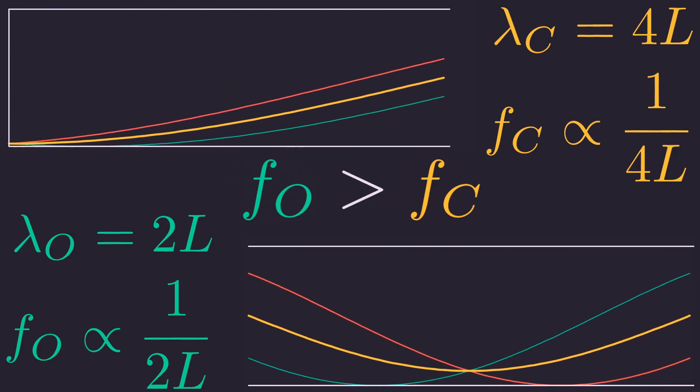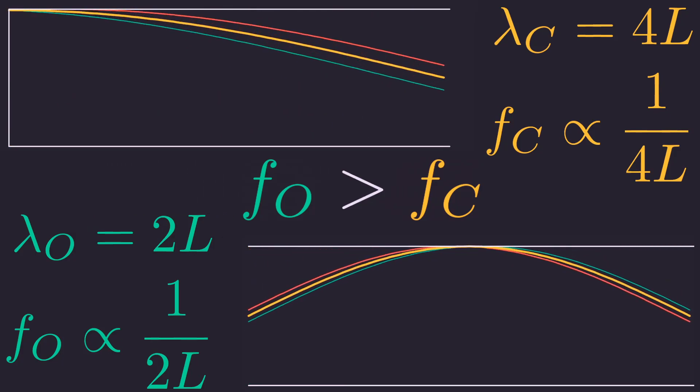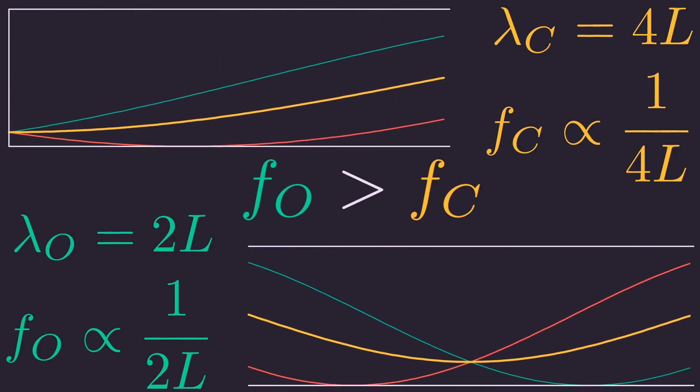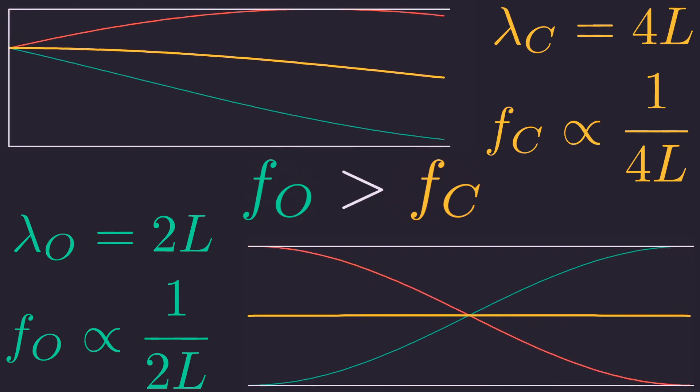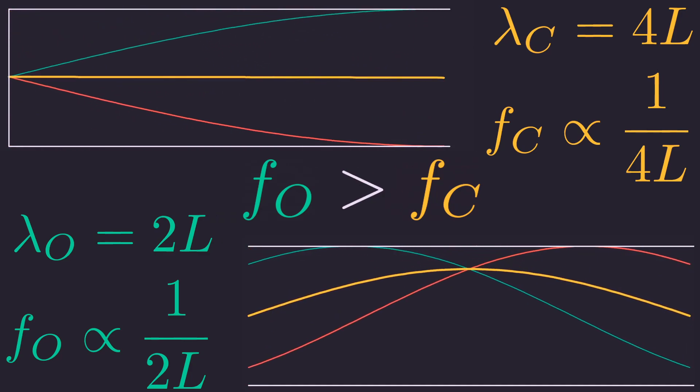The fundamental of the closed pipe has a wavelength, which is four times the length of the pipe. For the open pipe, the wavelength is just two times the pipe length.